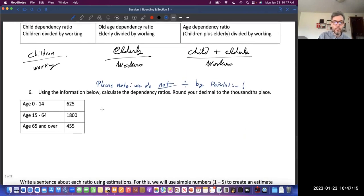So let's do a problem. Using the information below, calculate the dependency ratios and round your decimal to the thousandth place. Let's do the child dependency ratio first.